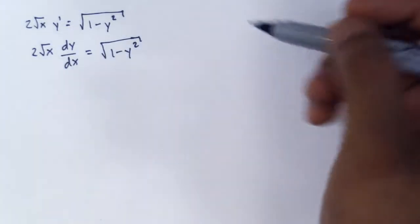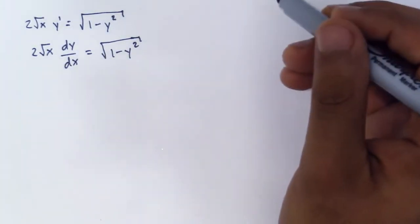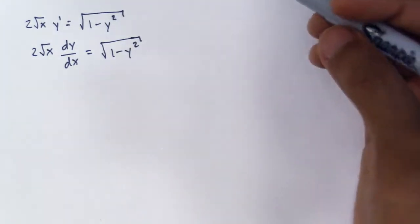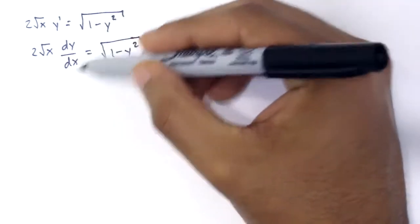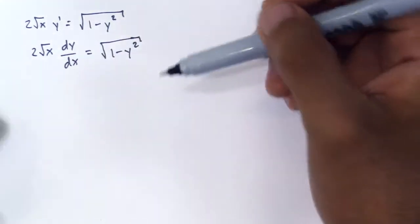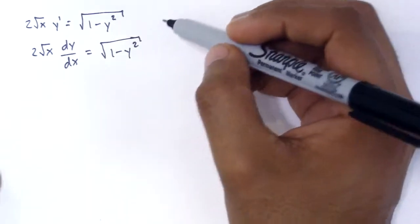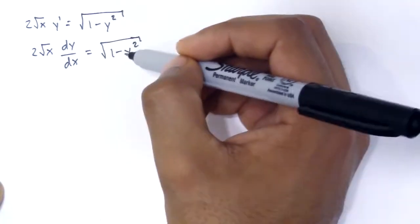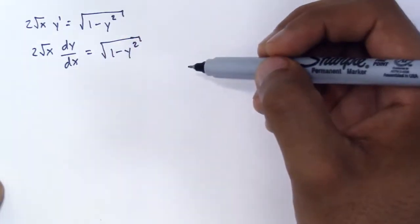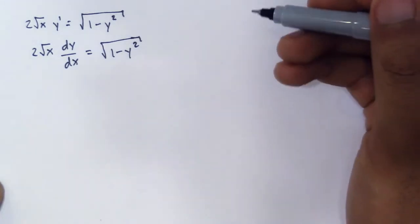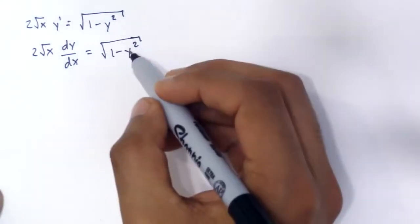So today we're going to start off with a separable differential equation. To see why it's separable, I rewrote it in this way so you can see how you can multiply by dx's or dy's to get the y's on one side and the x's on the other so you can integrate.